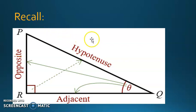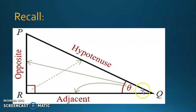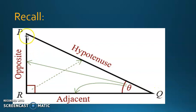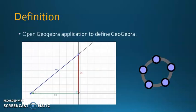Before we start with the chapter, I want to refresh your memory. In any right triangle, the hypotenuse is the side facing the right angle. Now suppose we're looking at angle Q — the opposite side of Q is the side facing Q, which is PR in this case, and the adjacent side of Q is the side issued from the vertex other than the hypotenuse, so it will be RQ. Suppose we're looking at P — the opposite side of P would be RQ and the adjacent side of P would be PR.